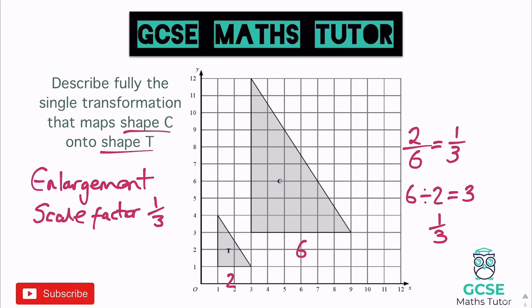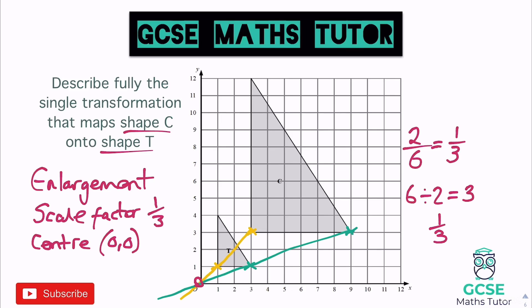Scale factor is one third. To find the center of enlargement, pick corresponding points and join them up with a ruler. Joining the bottom left corners, then another pair of points, the lines cross at the origin. So we write: enlargement, scale factor one third, center (0,0). Be careful about which direction the question is asking — A to B versus B to A will give scale factor three or one third respectively.